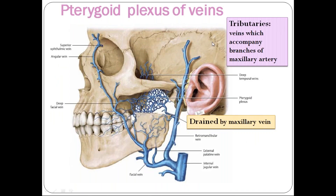Now the tributaries of the pterygoid plexus of veins: whatever veins accompany the branches of the maxillary artery are the tributaries — there is no specific name for them. This pterygoid plexus drains into the maxillary vein, which joins with the superficial temporal vein to form the retromandibular vein. The retromandibular vein divides into anterior and posterior divisions. The anterior division joins with the facial vein to form the common facial vein, which drains into the internal jugular vein.